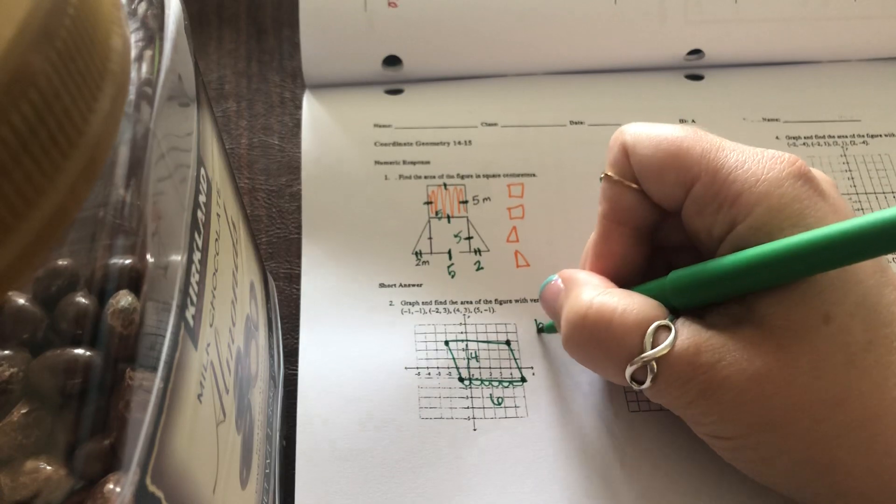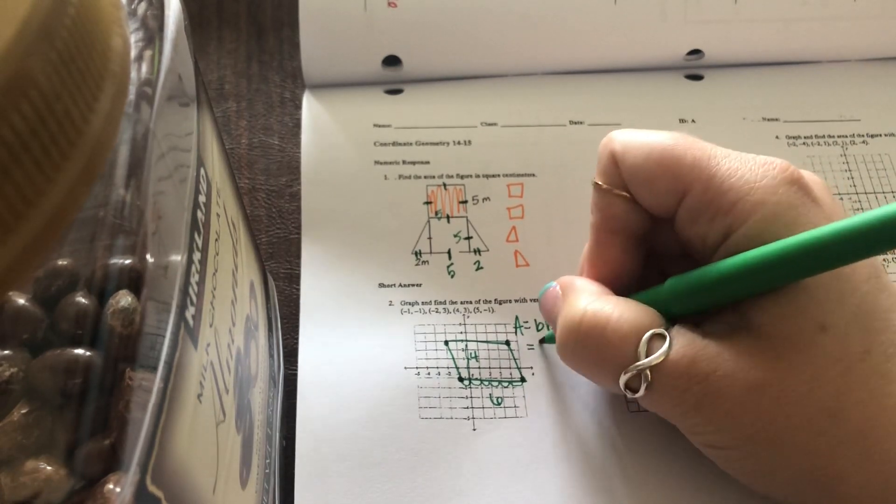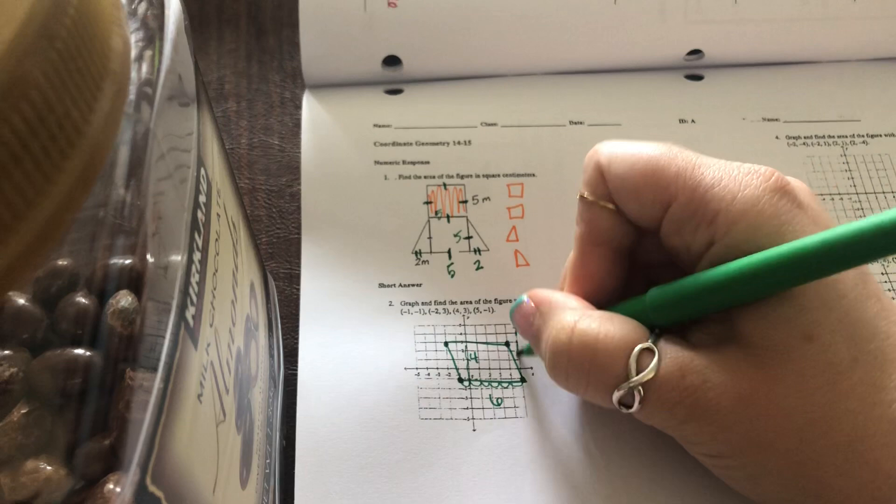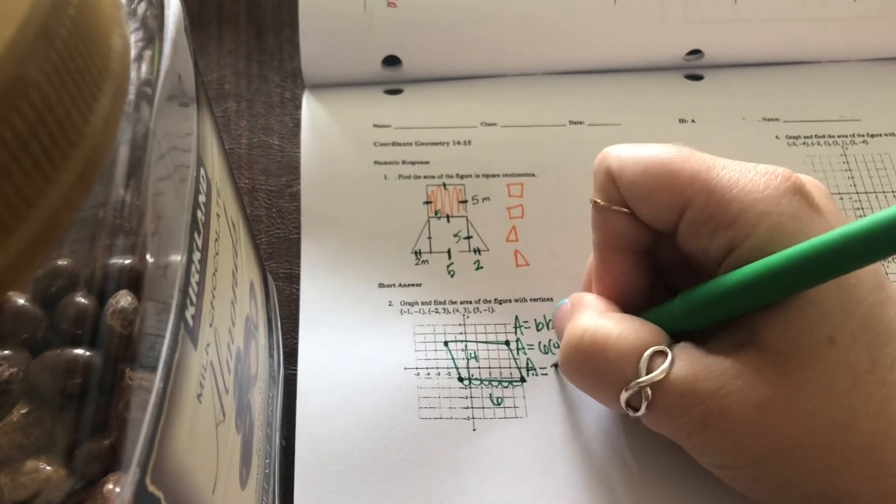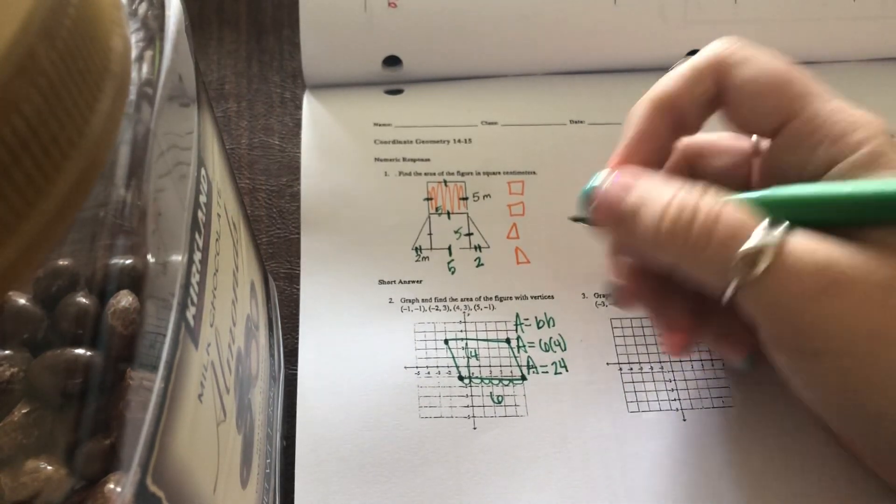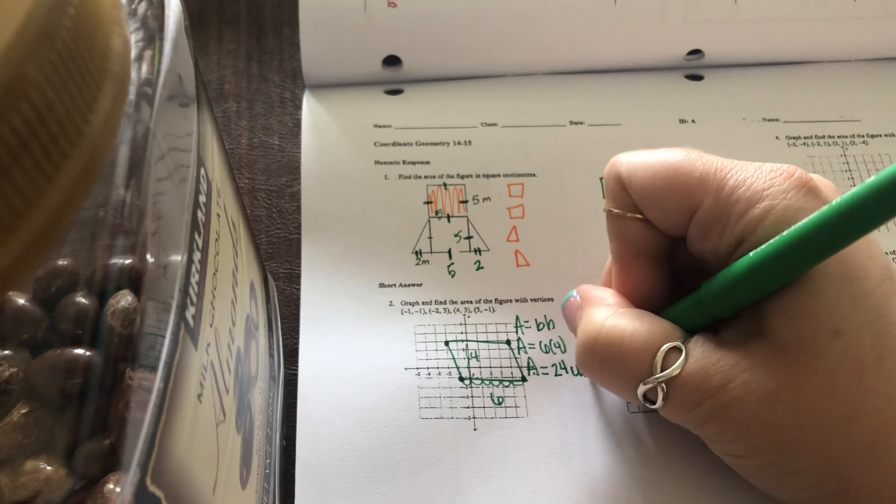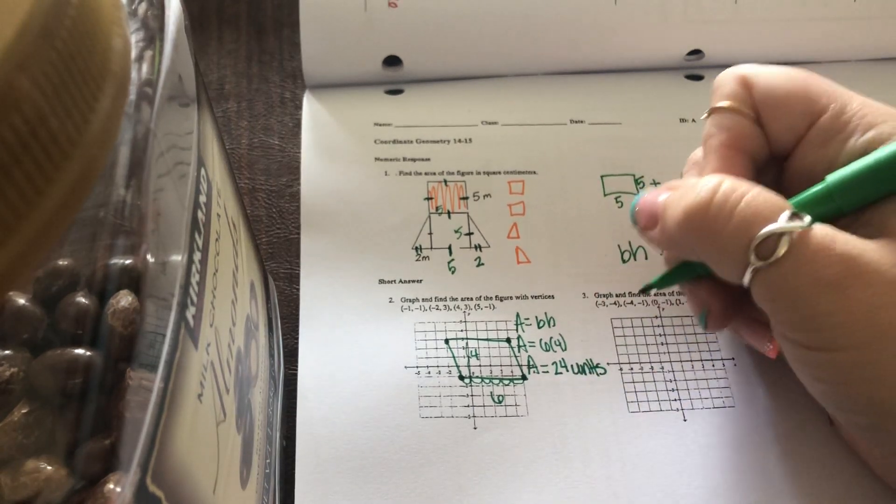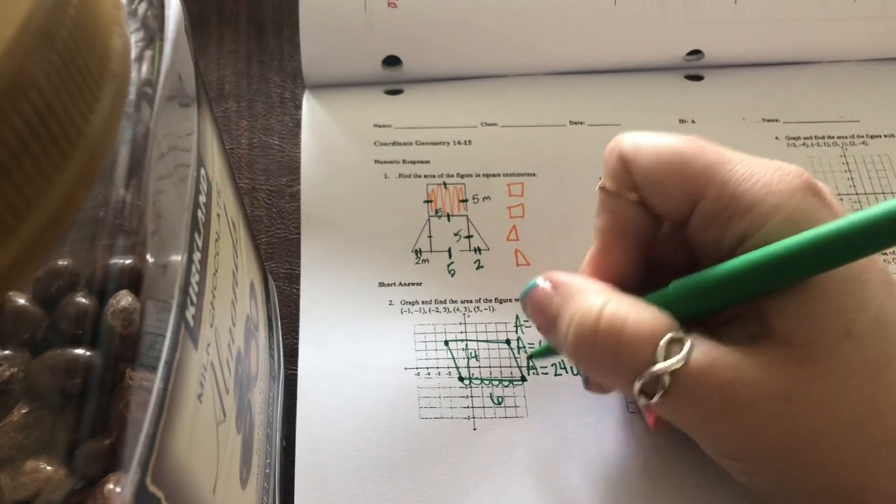So if you go area is base times height, well, six times four is 24. And if they don't tell you what units it's in, just write the word units. And if it's perimeter, it's just units. If it's area, it's units squared.